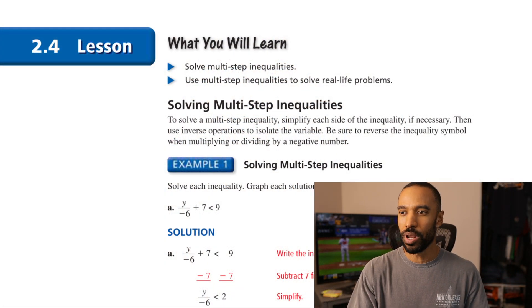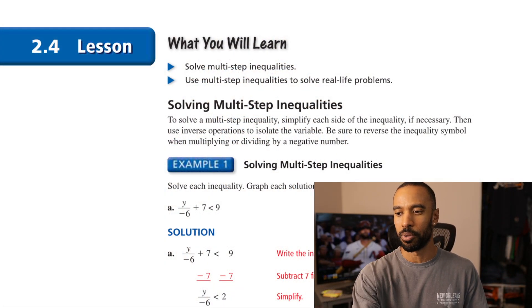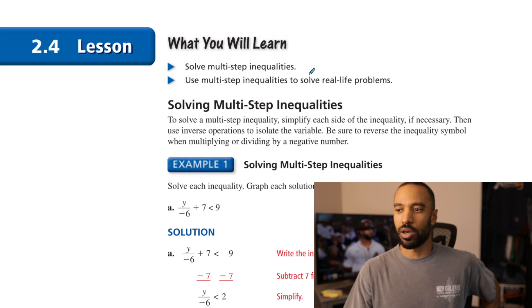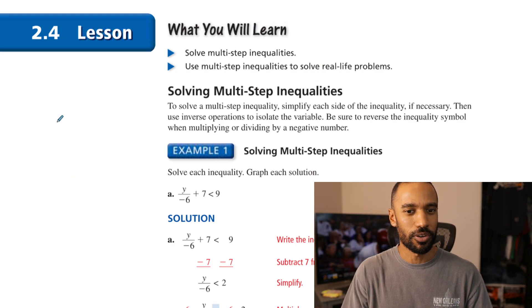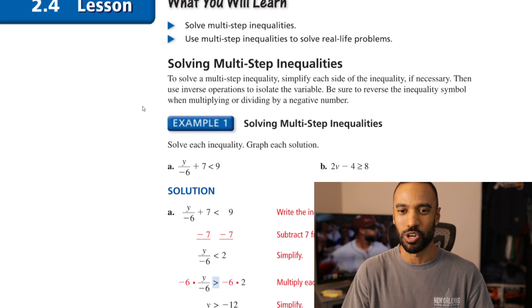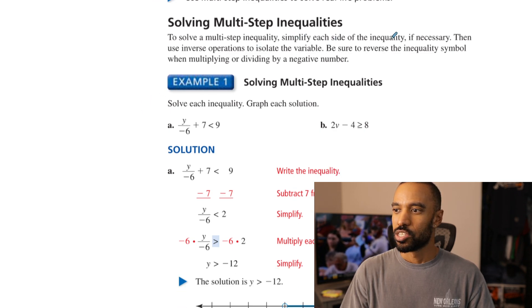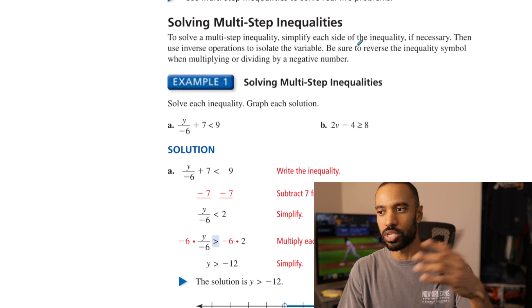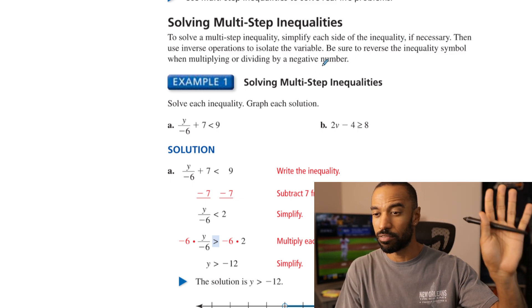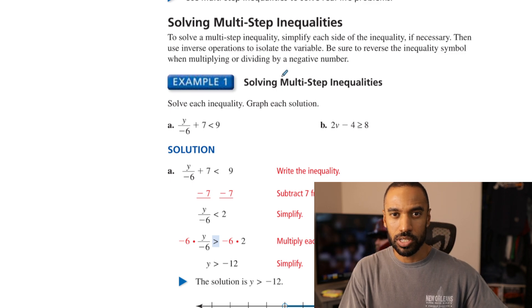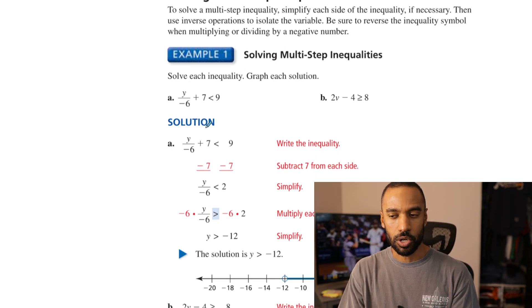I'm going to start with the lecture portion. If you'd like to follow along, just keep continuing on. Otherwise, go to the description section below and find the problem set for which I do the solution guide of 40 questions, and you can also download the PDF below. We're going to solve multi-step inequalities and use them to solve real-life problems. No new vocab. Simplify each side if necessary and use inverse operations. Be sure to multiply and divide by negative numbers carefully.